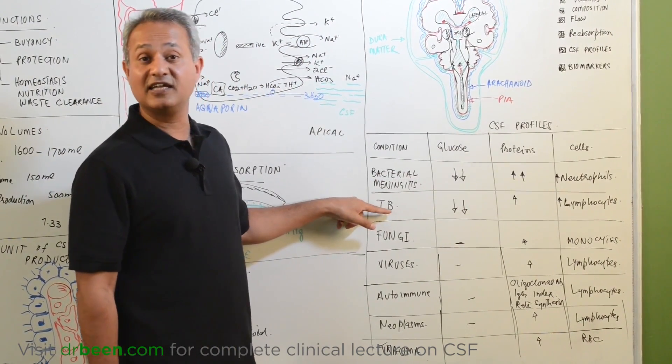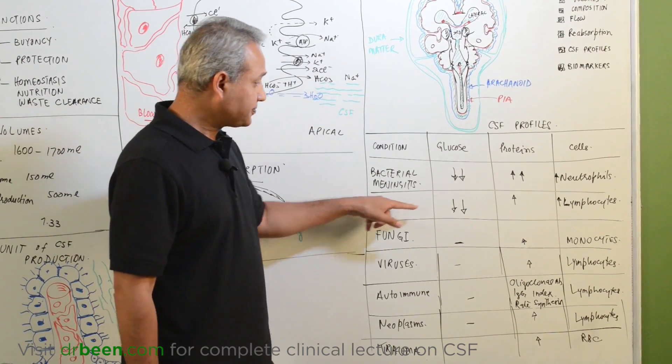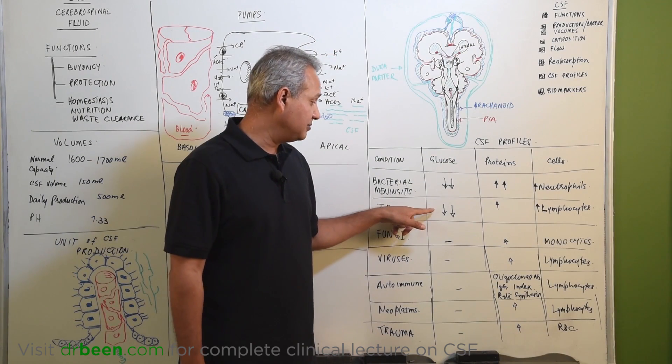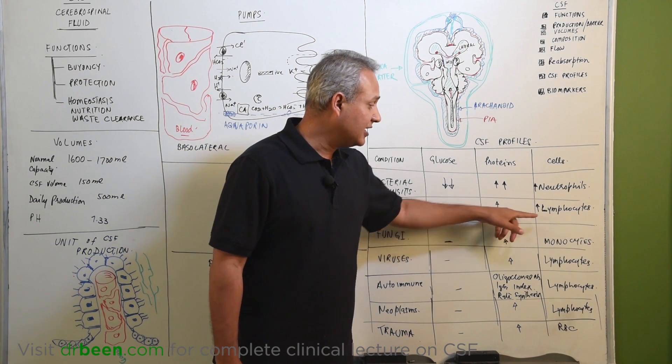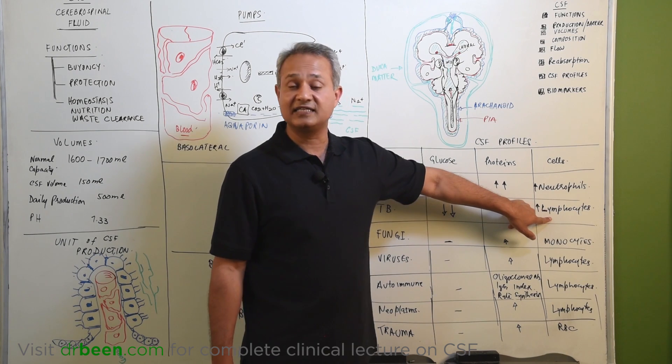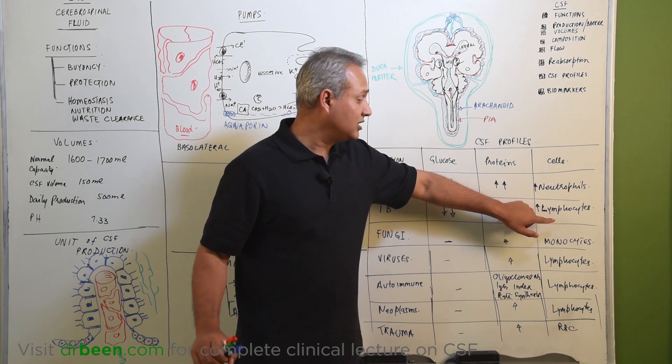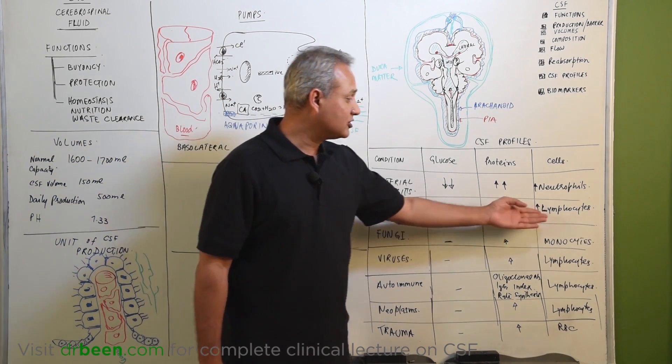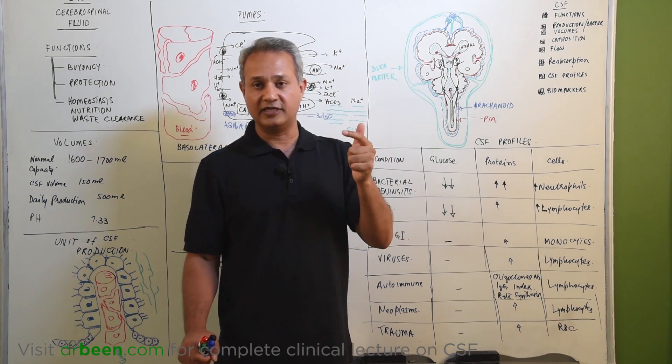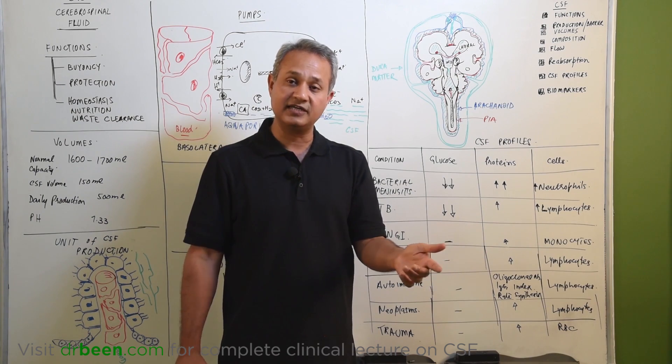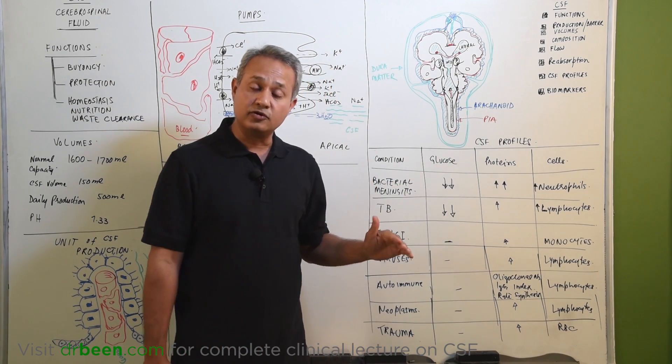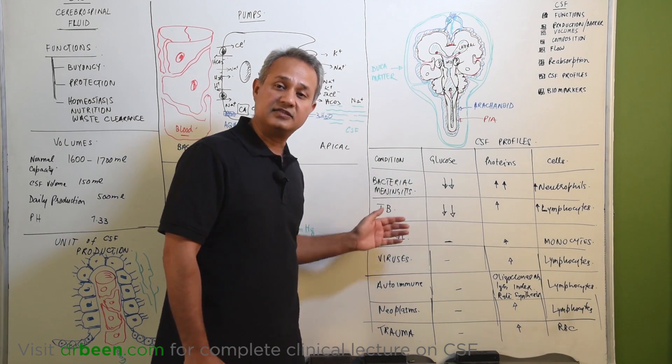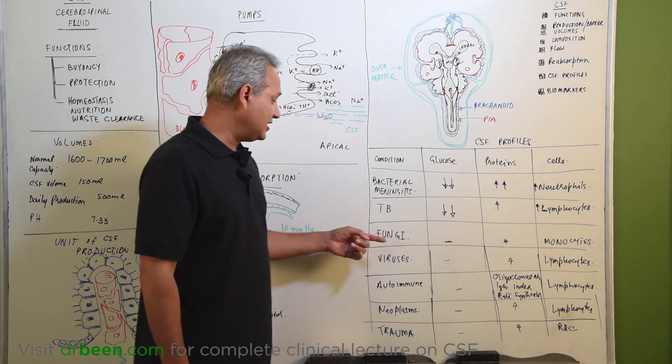Now, TB is also bacterial meningitis, but the profile is different. Glucose low, yes, that is very close to the bacterial meningitis. Proteins high, little bit high. However, this is important. Cells are lymphocytes. Now, please why this is important? Lymphocytes are also high in the viral meningitis. So, if you see lymphocytes high, you as a doctor, you are going to say, well that means, this person has a viral meningitis, but please look at the glucose. If the glucose is low, then this is not a viral meningitis in which the virus is eating glucose, this is TB. So, that is the TB's profile.